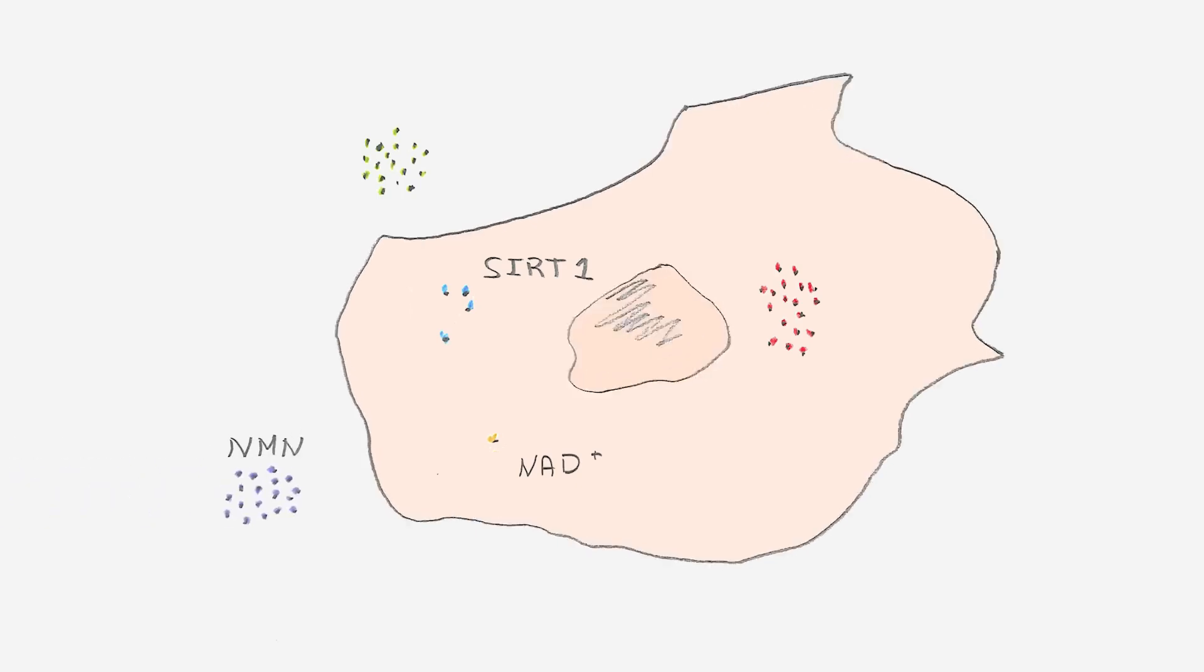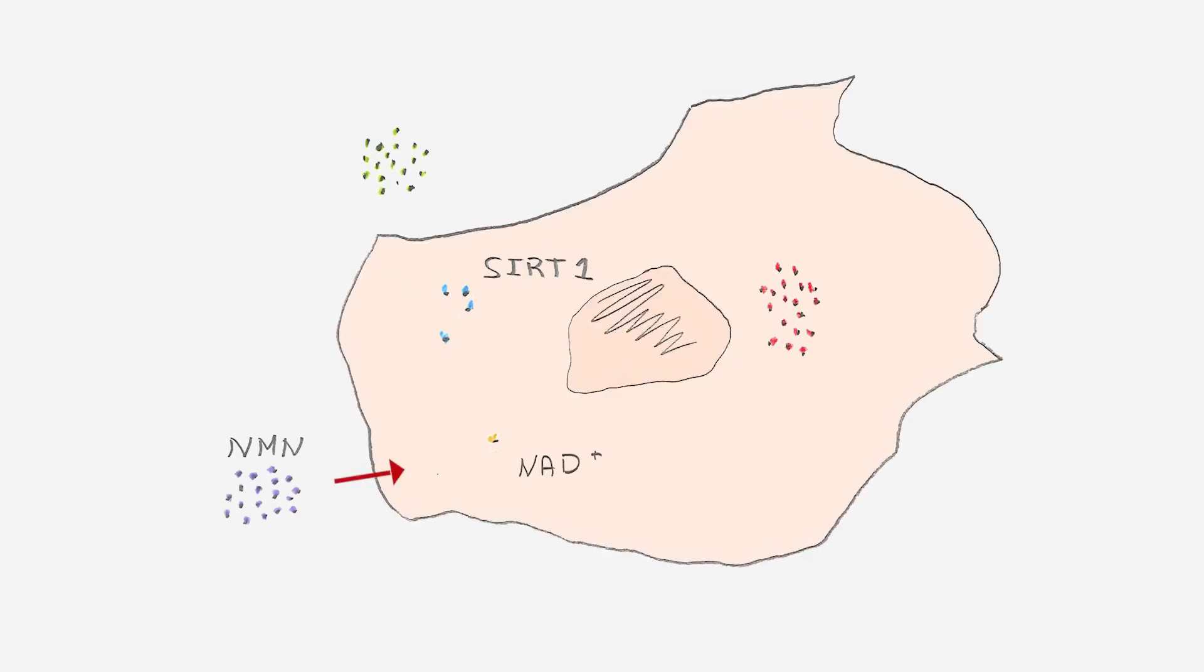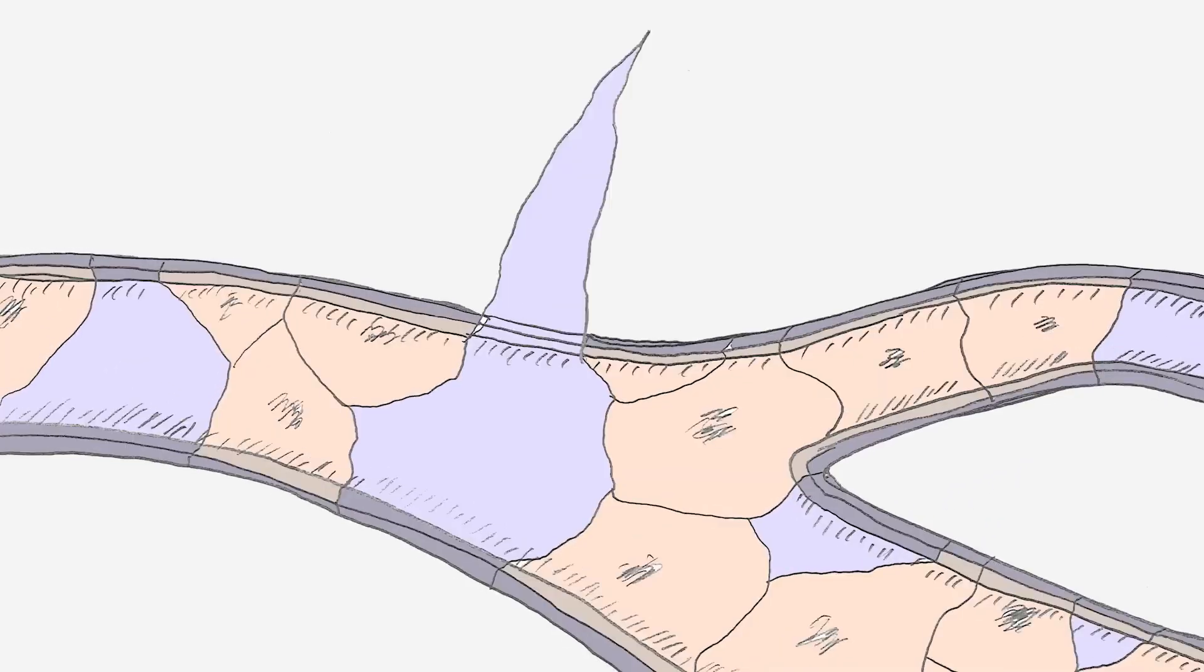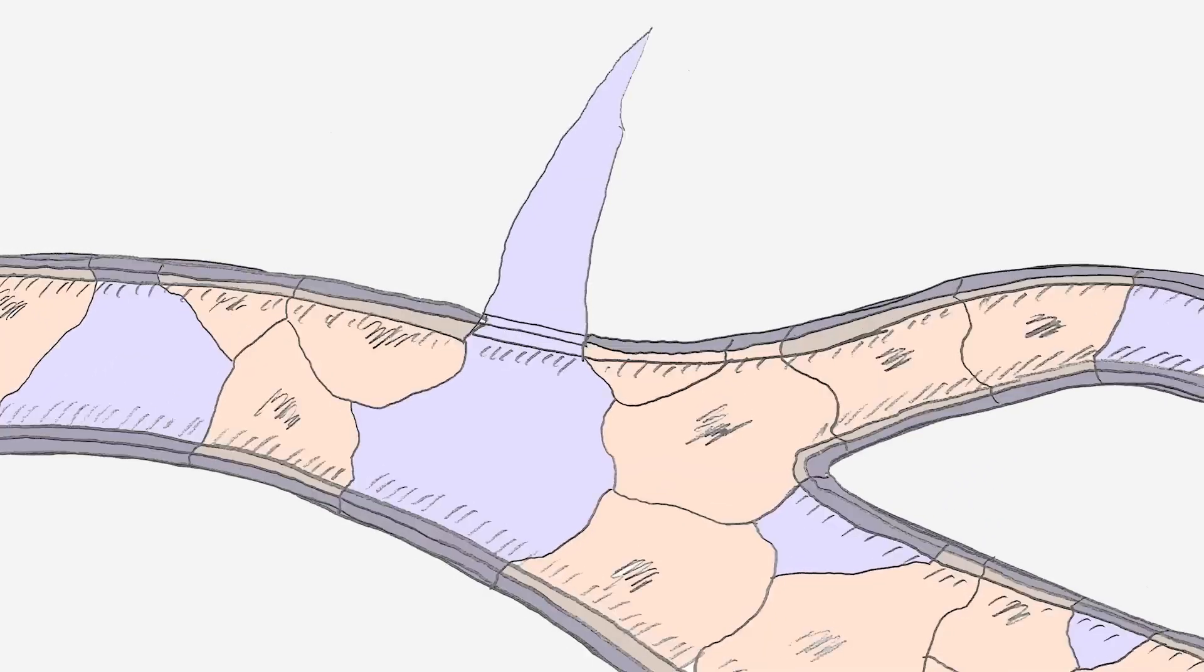In our new study, we gave mice NMN, a chemical compound commonly found in the body and previously shown to boost NAD levels, which in turn boosts SIRT1. These mice had better endothelial function, blood vessel growth, and improved blood supply to their muscles.